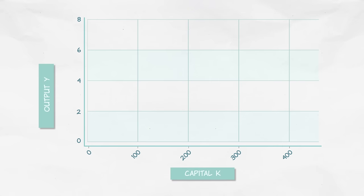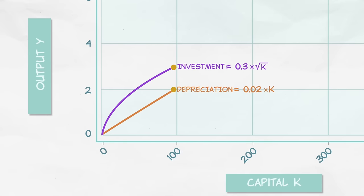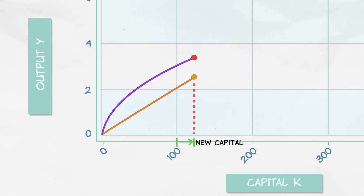Now let's put investment and depreciation on the same graph. Depreciation is growing at the same rate as the capital stock grows. Each new unit of capital creates an equal amount of depreciation. Now notice that when investment is greater than depreciation, that means the capital stock must be growing. We're adding more units of capital than are depreciating. But as the capital stock grows, investment and depreciation are on a crash course to intersect.